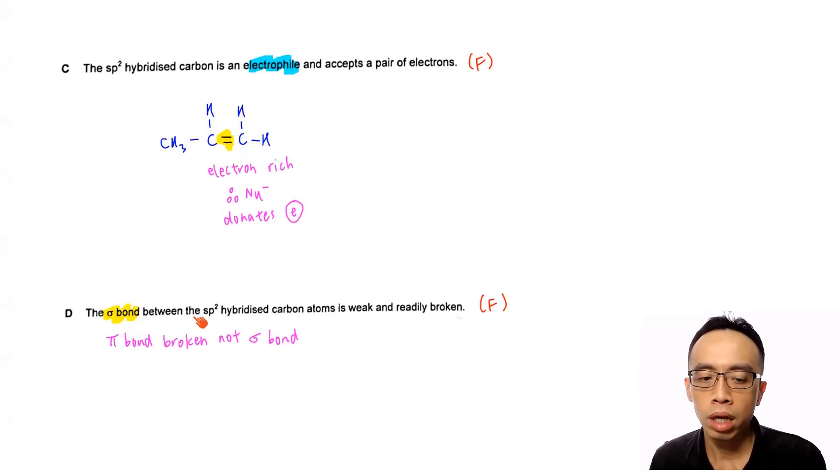Now D, the sigma bond between the sp2 hybridized carbon atoms is weak and readily broken. Now this is related to what we have talked about. When we run through options A and B, we have already shown that the bond that is involved in the reaction involving my alkene should be the pi bond. The pi bond is broken. It's not the sigma bond that is broken. So therefore D is also not true. D is false.